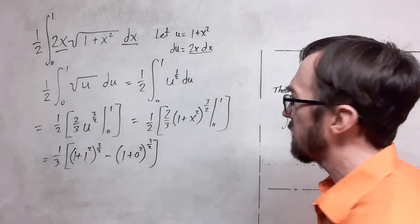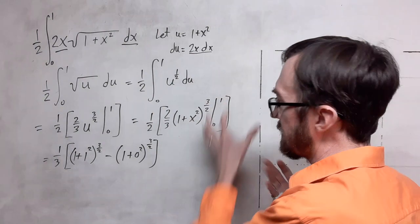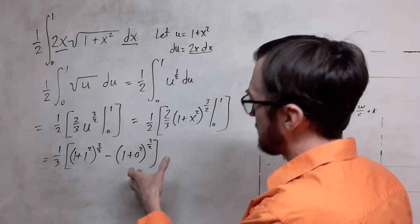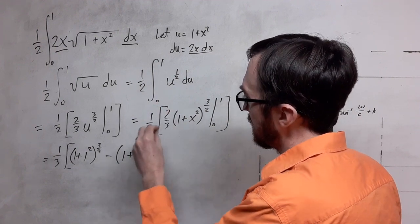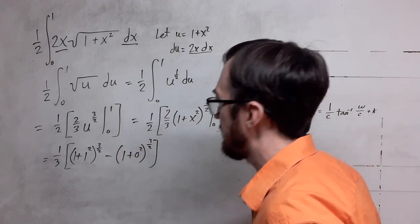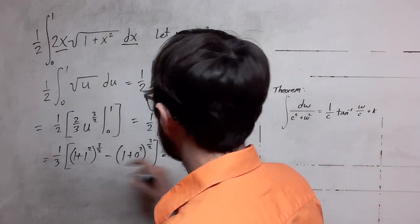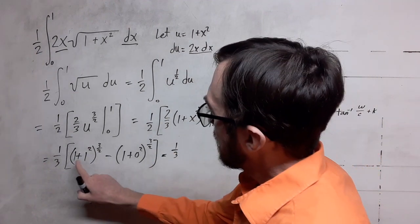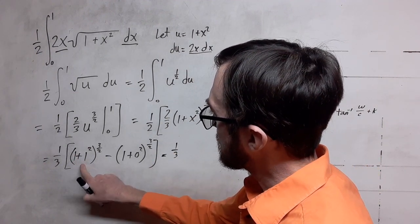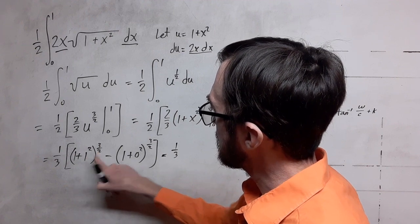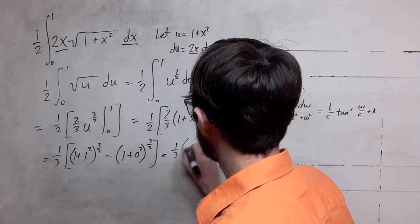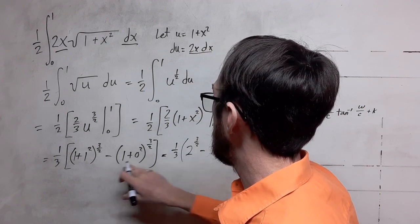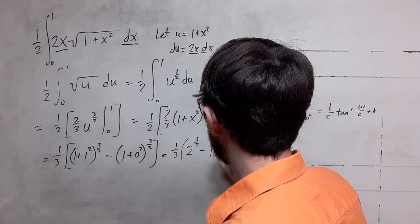Sometimes I get a little excited when I see the zero here because I think, oh, this thing's going to disappear. That doesn't always disappear — in this case it doesn't. We have zero squared which is just zero, but then we add that to 1 and get 1. We still have the 1 third on the outside. For the upper bound we have 1 plus 1, so that's going to be 2, and we want to take 2 to the 3 halves power. Over here we have 1 to the 3 halves power, which is just 1.